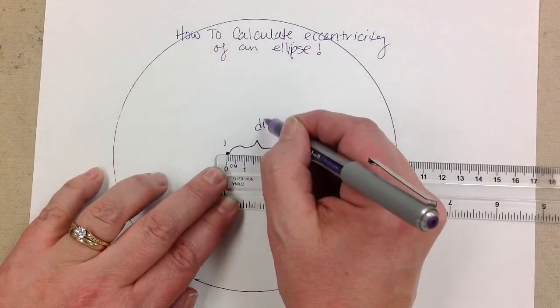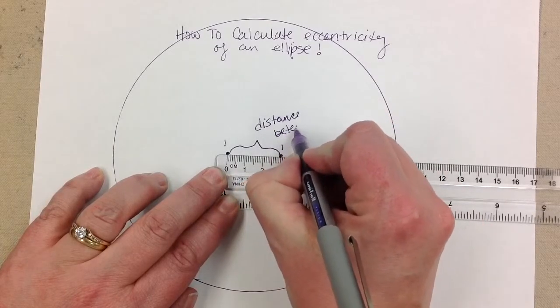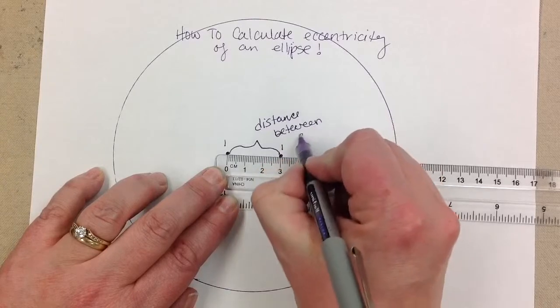Now I want to take my two measurements, the distance between the two foci, which in this case is 3.0 centimeters.